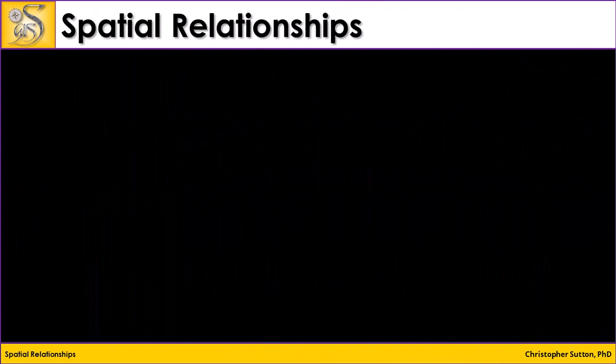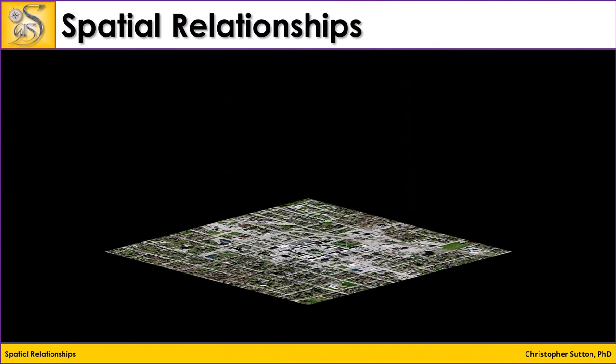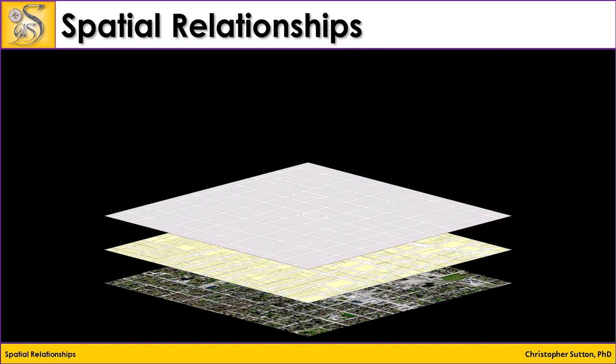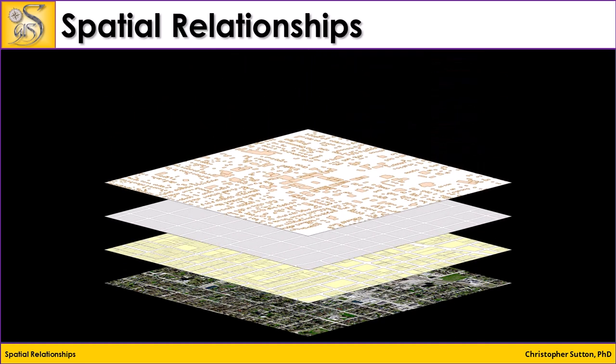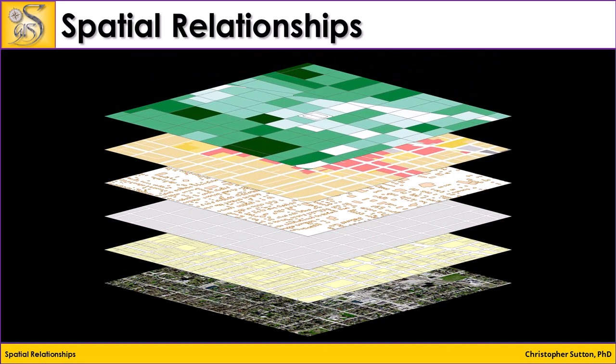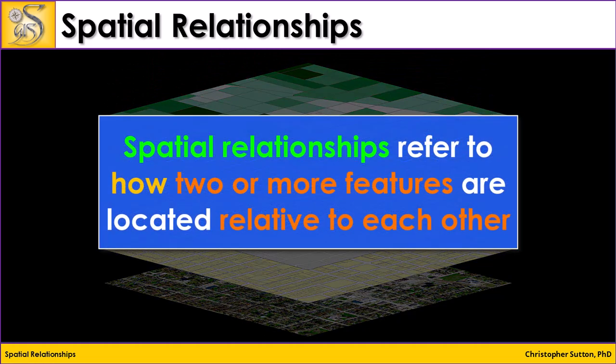In GIS, we tend to organize information into layers, like imagery, parcels, streets, buildings, zoning, population, and so on. Spatial relationships refer to how two or more features are located relative to each other. Such relationships are often understood in their spatial patterns.